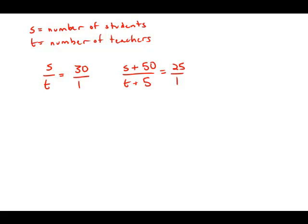So I'm going to cross multiply both these equations. S equals 30T and S plus 50 equals 25T plus 125.